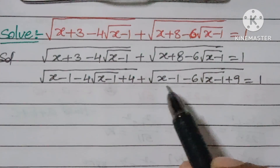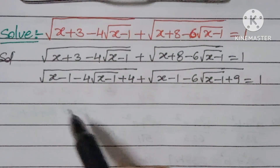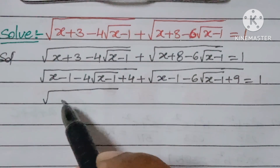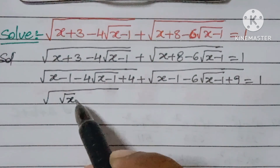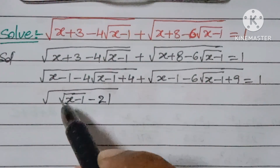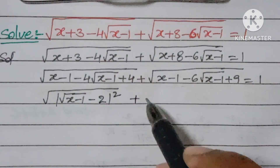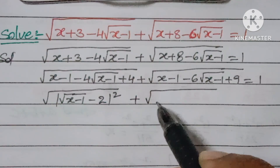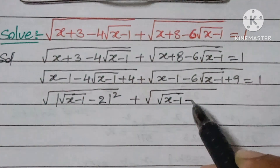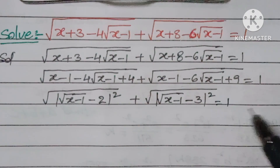Since both expressions follow the pattern a² - 2ab + b², they can be written as perfect squares. This gives us: square root of (√(x-1) - 2)² plus square root of (√(x-1) - 3)², which in mod form becomes |√(x-1) - 2| + |√(x-1) - 3| = 1.